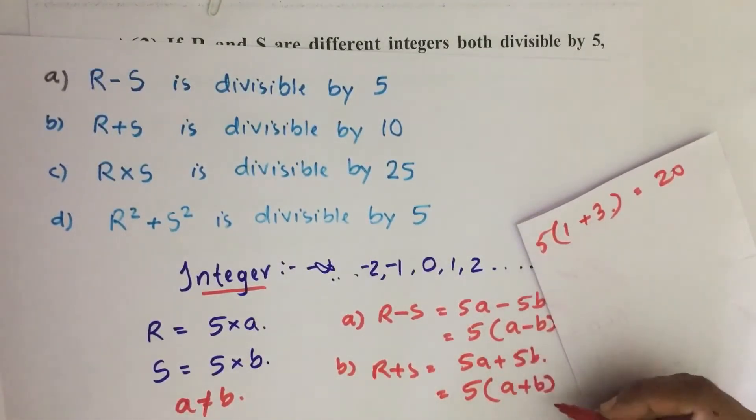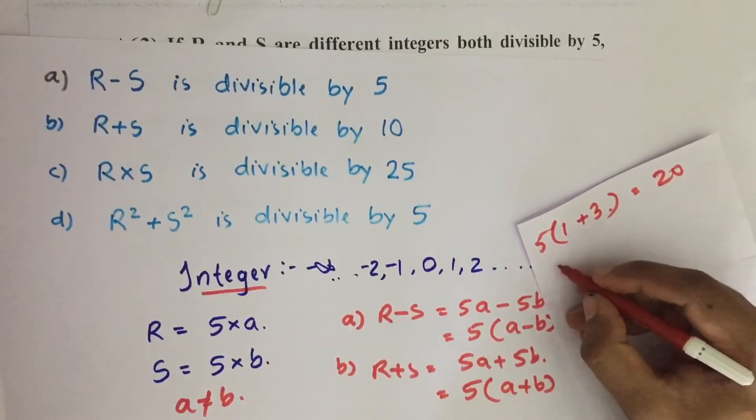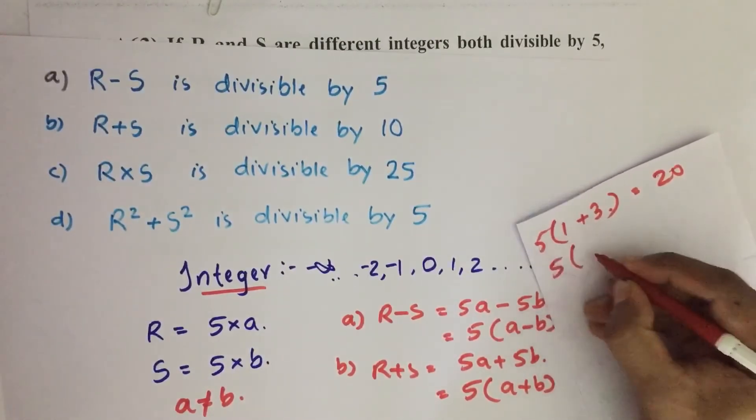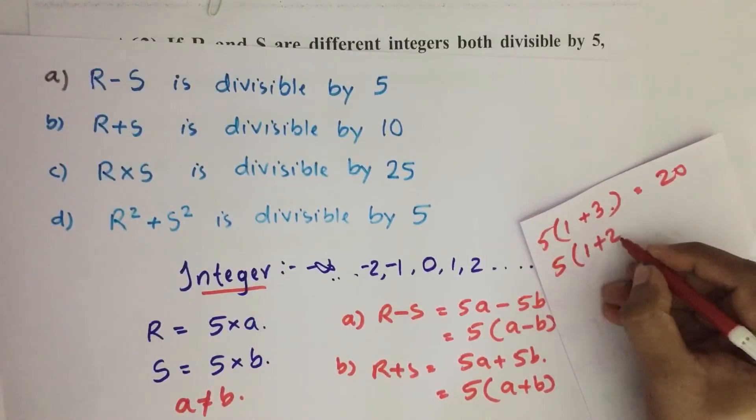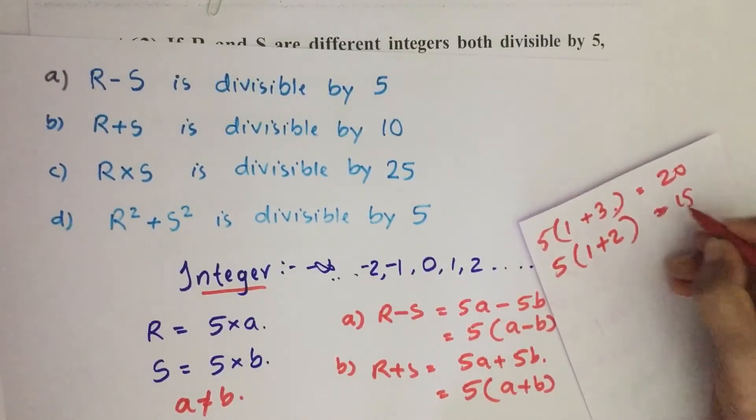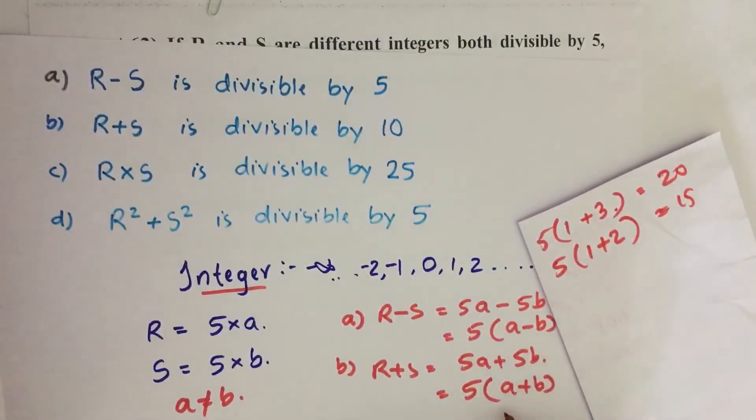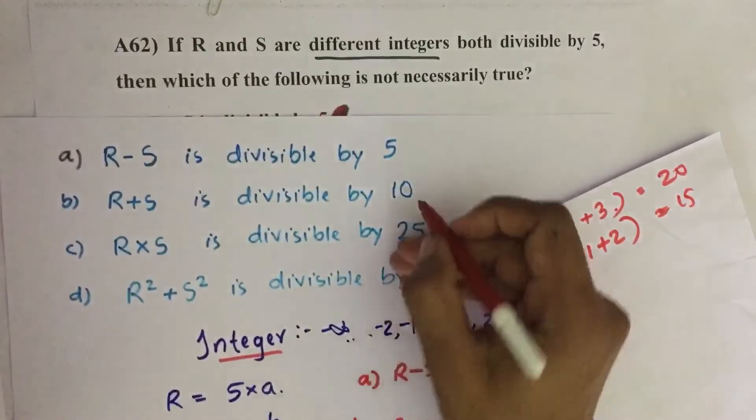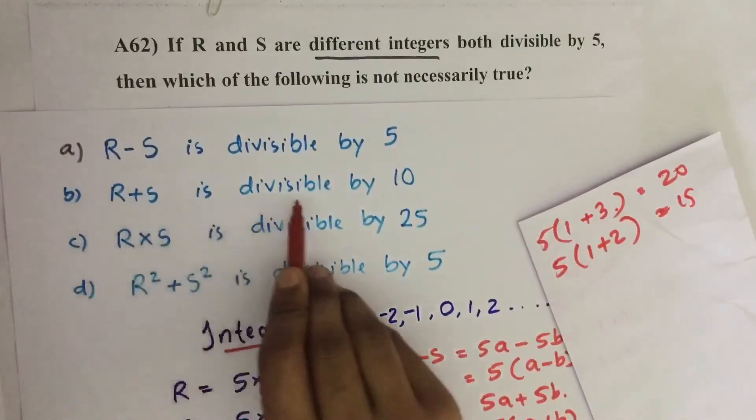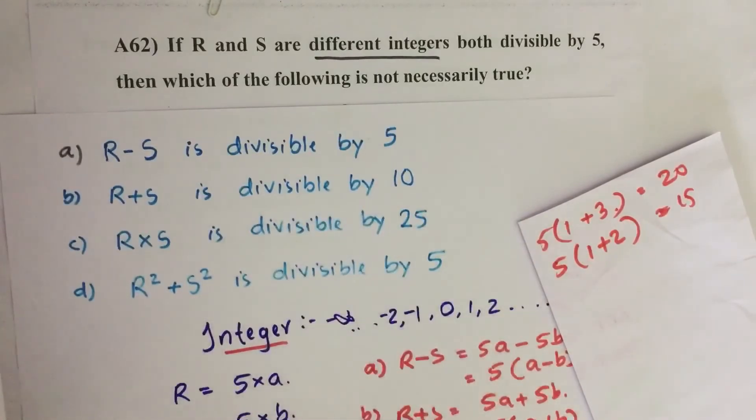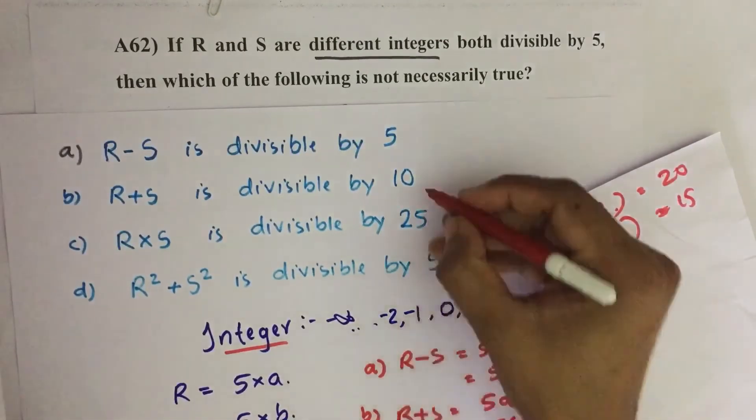Similarly, if A plus B equals an odd number, then 5 into 1 plus 2, which is 1 plus 2 equals 3, and 3 into 5 equals 15. When A plus B is an odd number, it is not exactly divisible by 10. So this is our answer: R plus S is divisible by 10 is not necessarily true, that means it is not true all the time. So this is our answer.